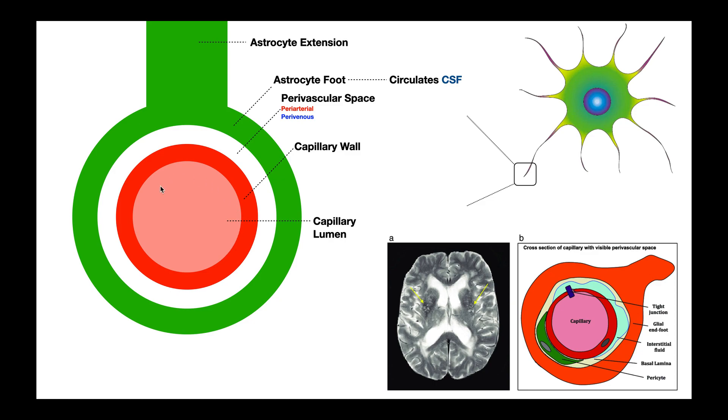Inside here's the lumen of that vessel. In white here is this space that's created because the foot doesn't hug the vessel super tight. It leaves this space in here. This space is the perivascular space. If this space is around a small artery, it's termed a periarterial space. Perivascular is more general and periarterial and perivenous are more specific.